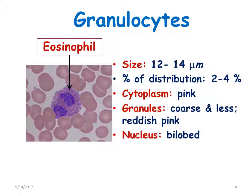Eosinophils also have almost the same size: 12 to 14 micrometers. Percentage distribution is 2 to 4%. The cytoplasm is pink in color. The granules are coarse and less numerous, picking up a reddish-pink color, and the nucleus is generally bi-lobed.